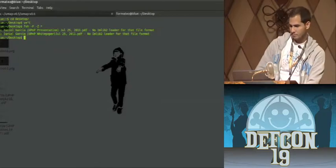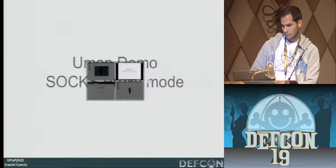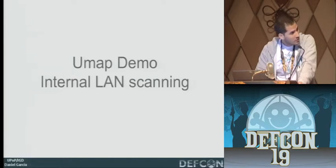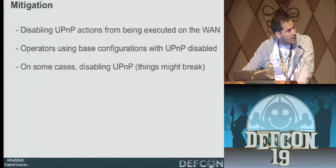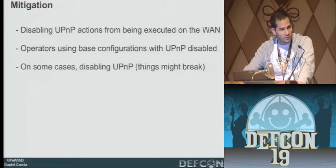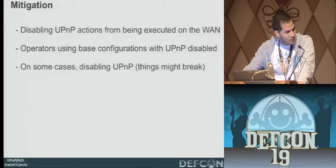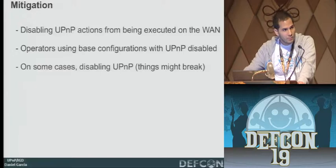That's the internal LAN scanning tool. How do we fix this? I don't know. There's no real best solution. First, we need to get everyone aware of this and start configuring their devices so UPnP only accepts actions from the LAN side. Unfortunately, some devices — even after you configure them to accept actions from the LAN side — just don't work. You configure them and they keep accepting WAN requests, which is pretty bad too.